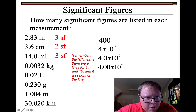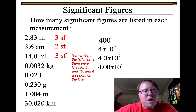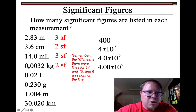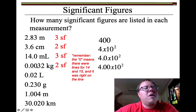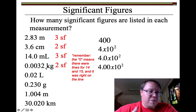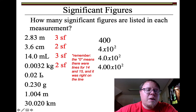0.0032 kilograms — which would be 3.2 grams, by the way — has two significant figures. These zeros in front don't tell you anything about the significance or uncertainty; they just tell you it's a really small number relative to the unit kilogram. So 3.2 grams has two, and 0.0032 kilograms also has two. These zeros don't count — they just tell you it's really, really small.